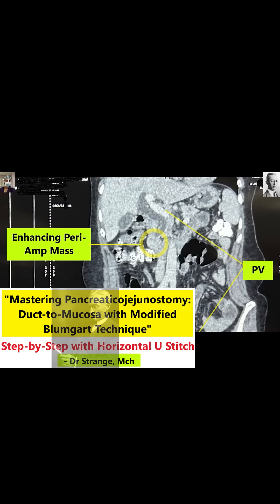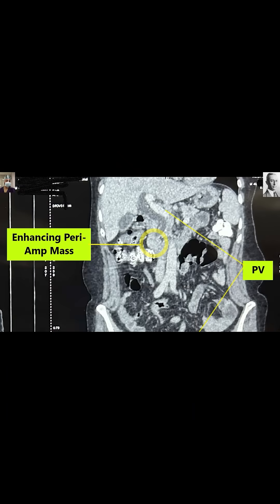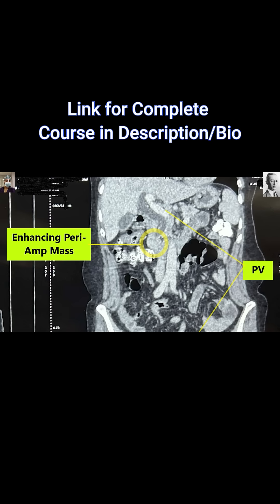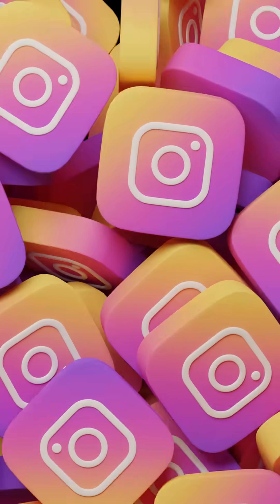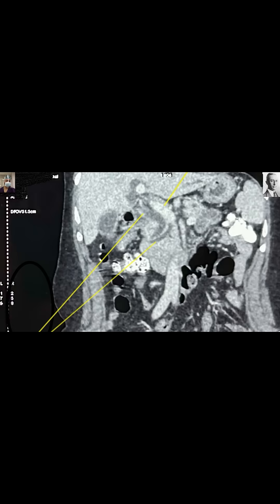This is the close-up view. The dilation of the CBD, the anatomy of the portal vein, and the enhancing periampullary mass are very well delineated. Viewers and students can pause the video and understand this configuration better. In this snapshot, the dilation of the CBD and the MPD is very well delineated, and the enhancing mass at the periampullary region is also seen.